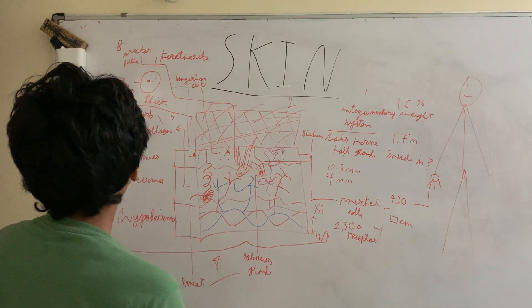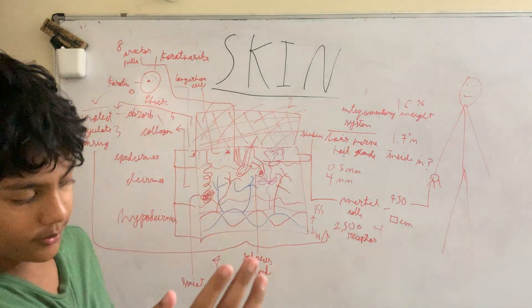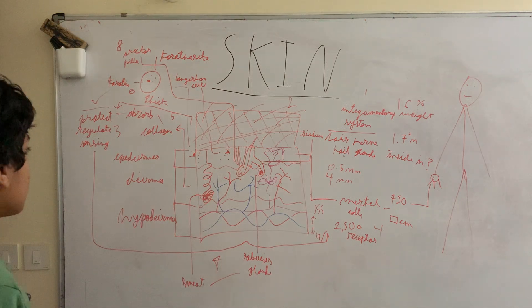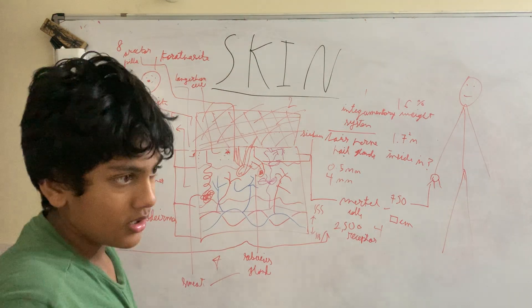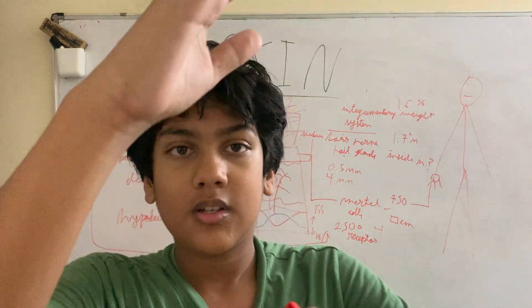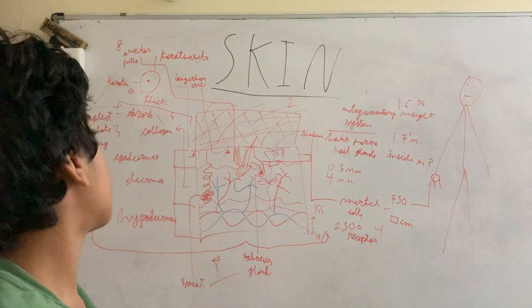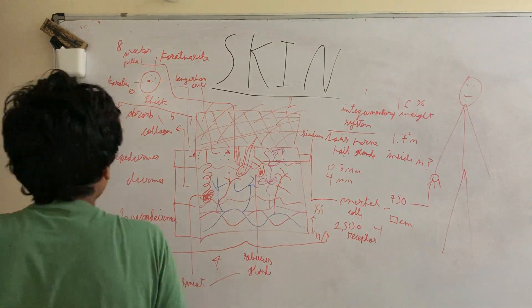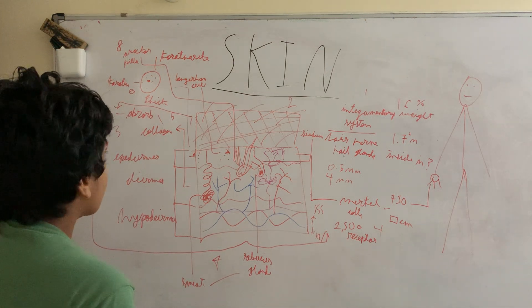What about the protection part? Our skin also protects us from physical stuff. In the dermis sector it's mostly made up of collagen which allows us to absorb. If we get hit, it absorbs the damage, which protects us.